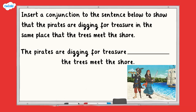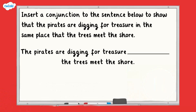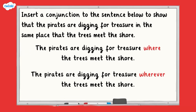This final question is asking you to add a conjunction which shows that the two events happened in the same place. You might want to write the missing conjunction on a whiteboard or a piece of paper, or you may just want to say your answer out loud. Pause the video now and hit play when you have an answer. The pirates are digging for treasure where the trees meet the shore. You could have chosen the conjunctions where or wherever to express that the two events happened in the same place. Well done if you got that question right.